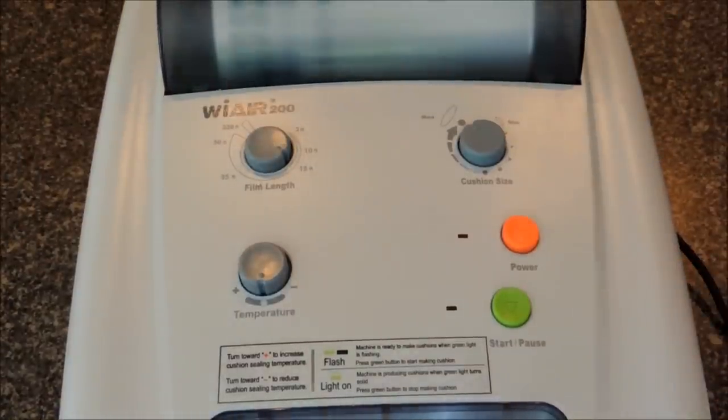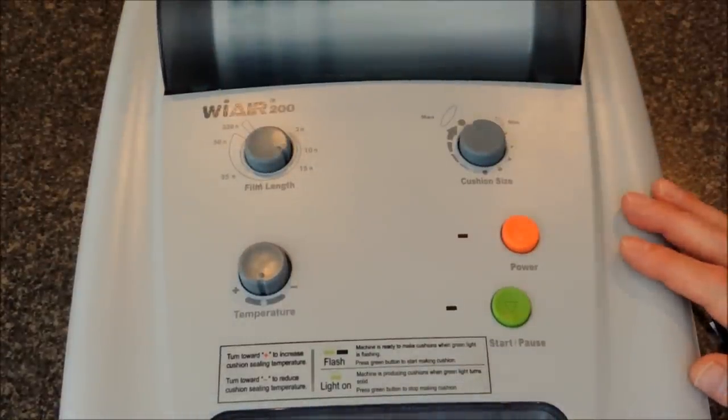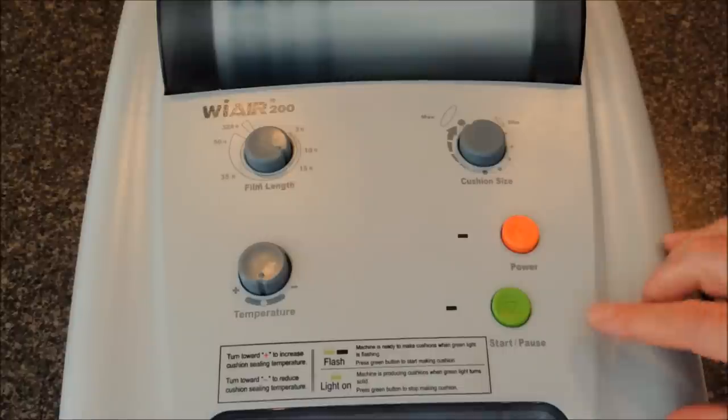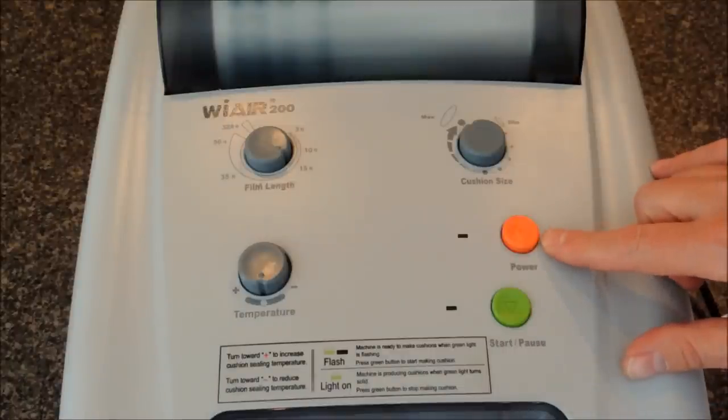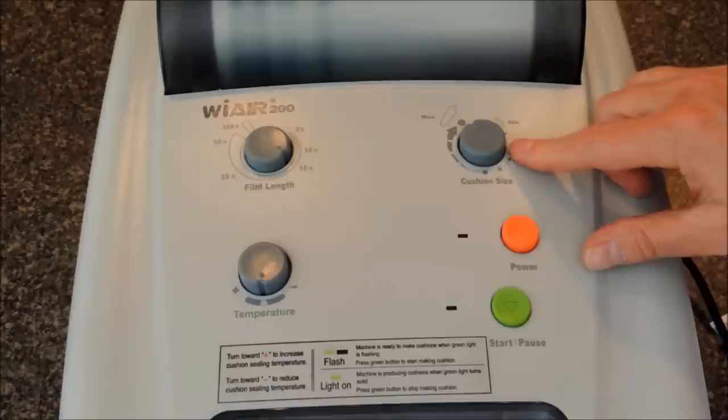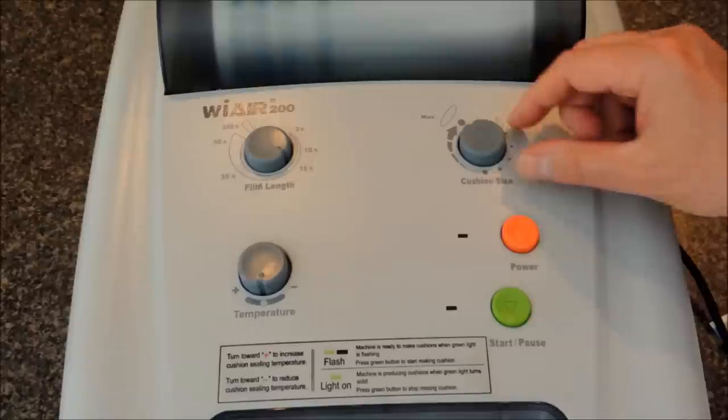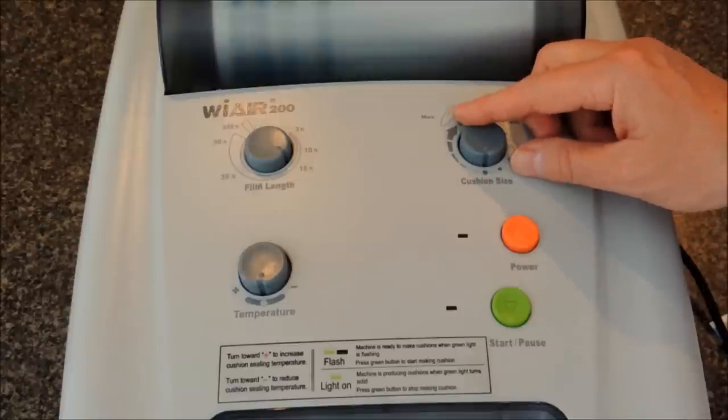We're going to take a look at the control panel of the Wier 200. On the lower right hand side is the start button. The power button is the orange button. The selector on the upper right hand side is the cushion selector button for size.